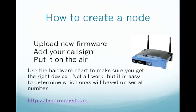How do you create a node — how do you turn this consumer Linksys wireless access point into a mesh node for amateur radio? Basically, you go to hsmm-mesh.org, download the firmware, upload it into the device, add your call sign, turn it on, and put it on the air. It's about as simple as that.